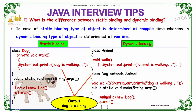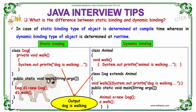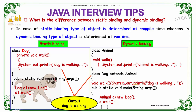So, if you see, when I invoke the walk method using this object a, it will invoke the derived class method. This is known as dynamic binding and it happens only during the run time — the compiler will be able to know that this is the method it has to execute.